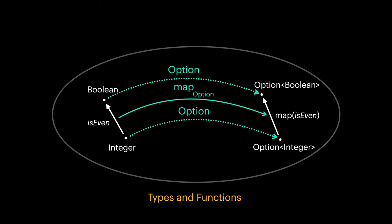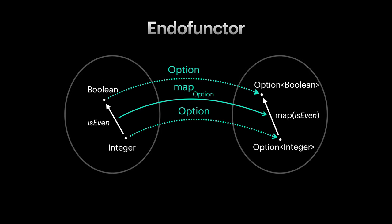A functor that maps a category to itself is called an endofunctor. As a matter of fact, all functors are endofunctors in functional programming. But I still like to think of them like this diagram.